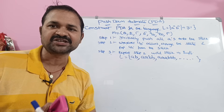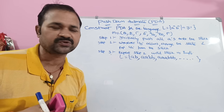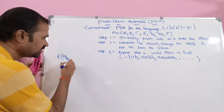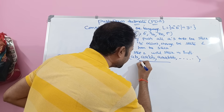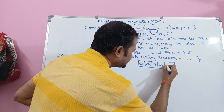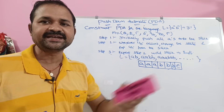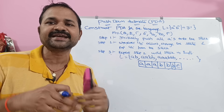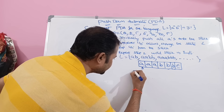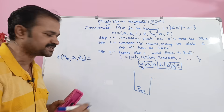Now let us calculate the transition function delta. If we calculate delta, then from delta we can simply write the remaining 6 tuples also. Let the input string be 3 A's and 3 B's. Initially we are at state q0. Delta of q0 comma A comma Z0 equals q0 comma A Z0. Here the input symbol is A, so we perform a push operation — no need to change state. Now the stack contains A and Z0.